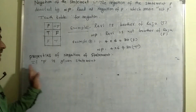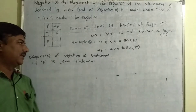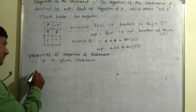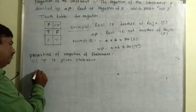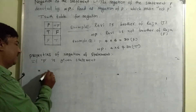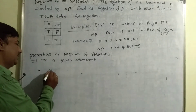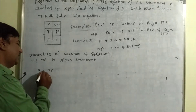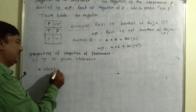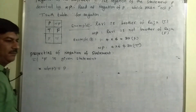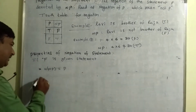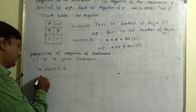Now let us see the properties of negation. P is any statement. Property number 1: the negation of the negation of P is P — that is, double negation returns the original statement.